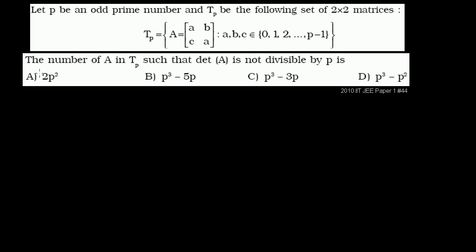In problem 44, we have the exact same setup that we had in problems 42 and 43. But now they're asking us the number of A in t_sub_p such that the determinant of A is not divisible by p. We've already done some work in problem 43 figuring out some set of the members that are divisible by p. So let's figure out the total number of members of t_sub_p, then subtract the total members whose determinants are divisible by p, and we'll get our answer.